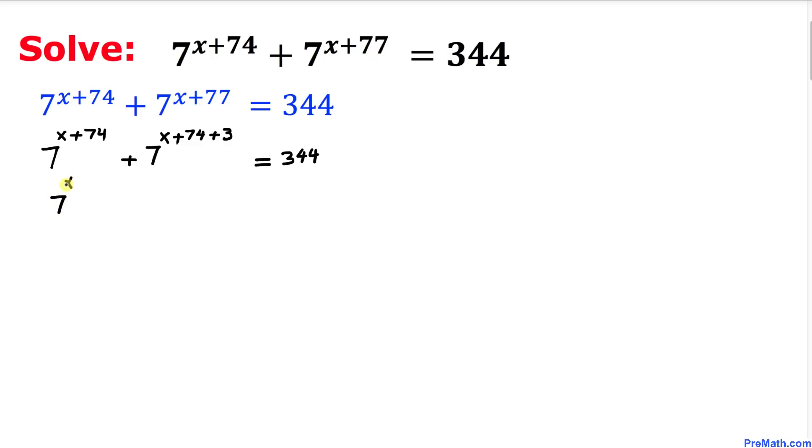Now let's go ahead and furthermore copy this thing down: 7 to the power of x plus 74, plus... and now let's focus on this part over here. We are going to use this product rule to write this one as 7 to the power of x plus 74, times 7 to the power of 3, equal to 344.